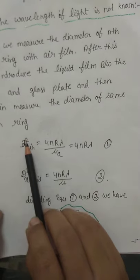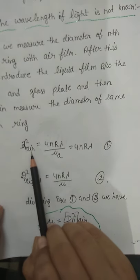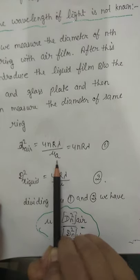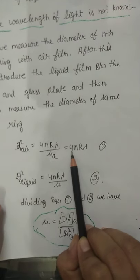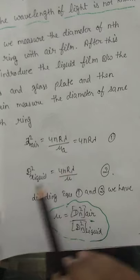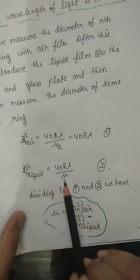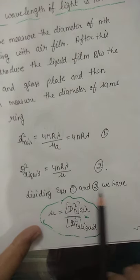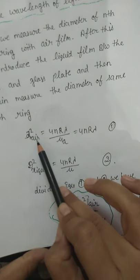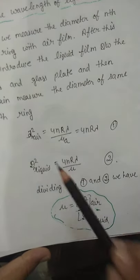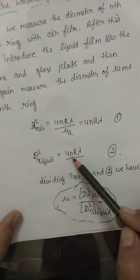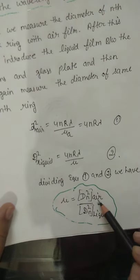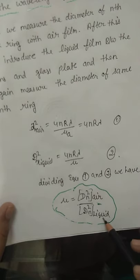So D_n squared — the diameter of the nth ring in air — equals 4n × R × lambda / mu_a. Since mu_a equals 1 for air, the equation becomes D_n² = 4nR × lambda. For the liquid film, D_n² = 4nR × lambda / mu. Dividing equation 1 by equation 2, D_n² (air) / D_n² (liquid) = mu, so mu = D_n² (air) / D_n² (liquid).